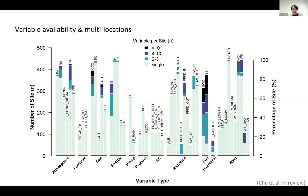Looking at variable coverage across sites — how many sites have each variable in the dataset — AmeriFlux is pretty organic, meaning everyone chooses which variables and instrumentation they collect at their site. There are some core measurements shared among most sites: flux, radiation, long-wave and short-wave measurements, PAR, soil measurements, temperature, humidity. But there are a lot of variety driven by research needs, so people might have a very unique set of instrumentation or variables collected at the site.